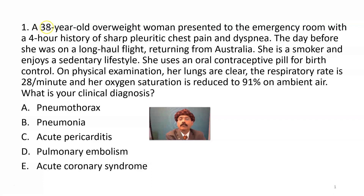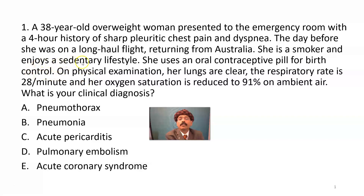You will read the question. A woman presented to the emergency room with a four-hour history of sharp pleuritic chest pain and dyspnea, that means difficulty in breathing. The day before, she was on a long-haul flight returning from Australia. She is a smoker and enjoys a sedentary lifestyle. She uses an oral contraceptive pill for birth control. On physical exam, her lungs are clear. Respiratory rate is 28 per minute. Her oxygen saturation is reduced to 91 percent on ambient air. What is your clinical diagnosis?